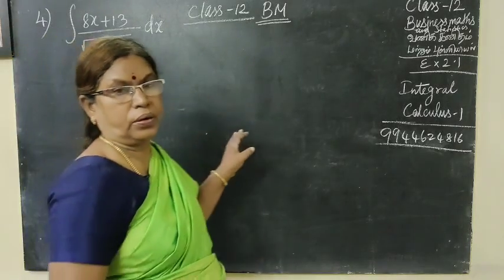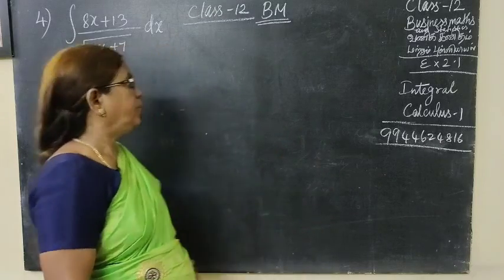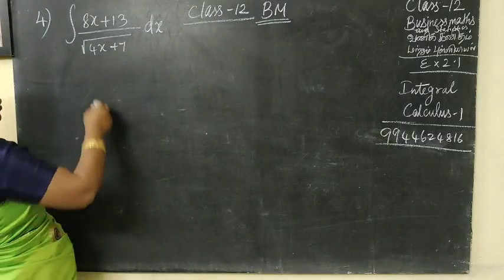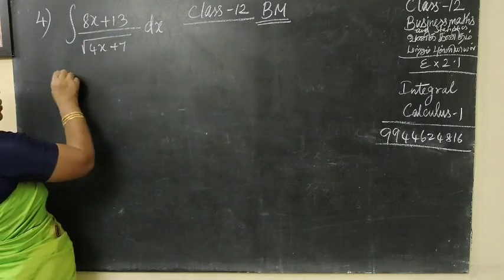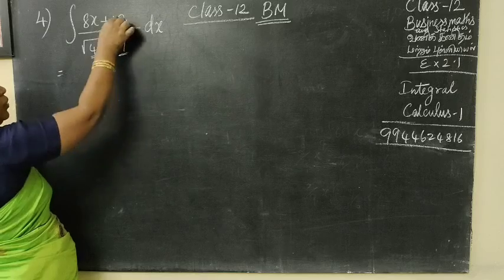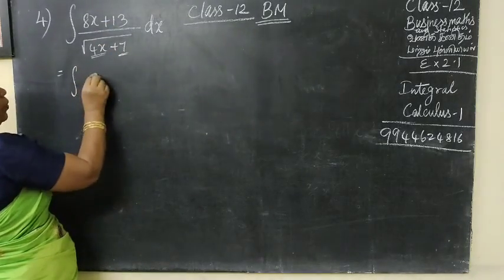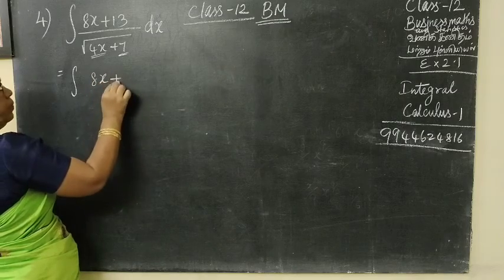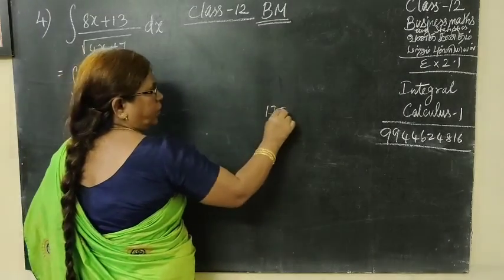Good evening students. For Class 12 Business Math Exercise 2.1, Question Number 4: integral of 8x plus 13 by root of 4x plus 7. In the numerator, there is a small correction. So we write integral 8x plus 13. 14 minus 1, so 13 can be written as 14 minus 1 by root of 4x plus 7.